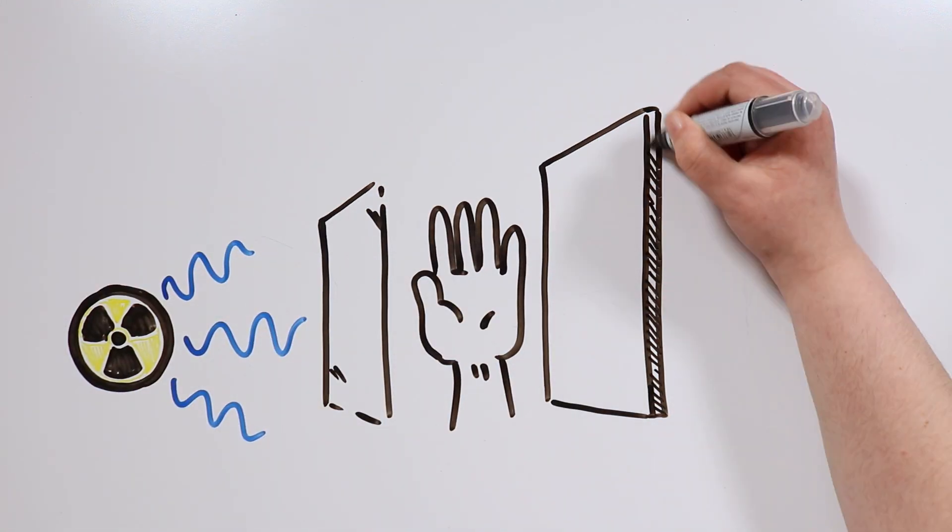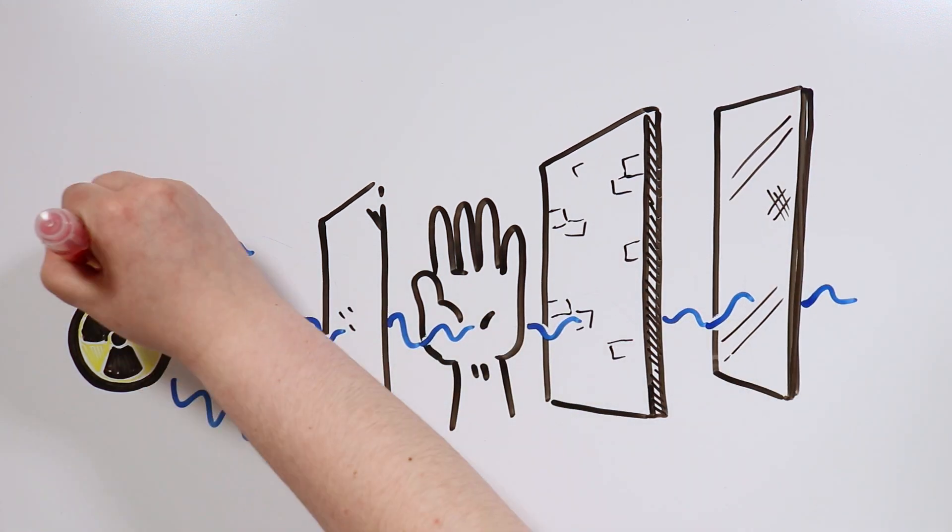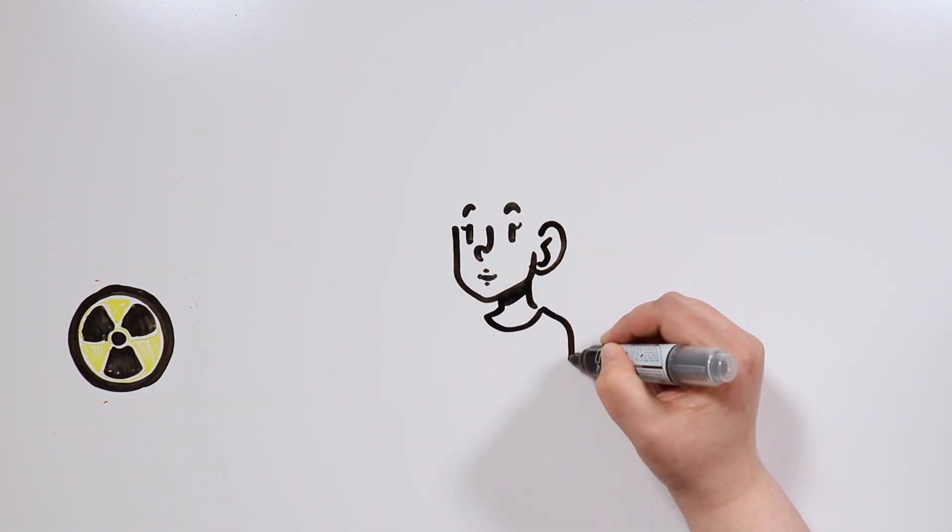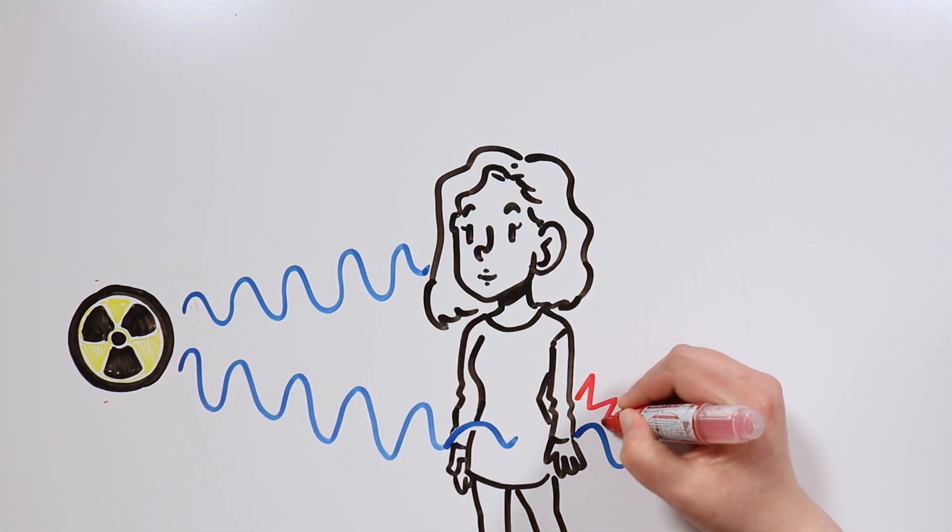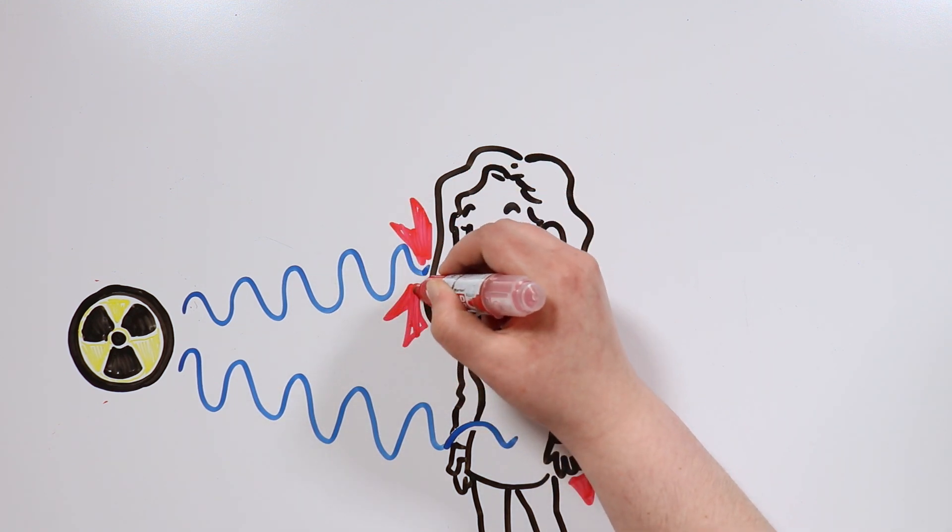The stronger the radiation is, the more its energy will be, and thus, the higher its capacity to break the atomic bonds we were talking about before. When talking about ionizing radiation, humans can be exposed to it internally or externally. In other words, it can go into our bodies, or just touch our skin or clothes.